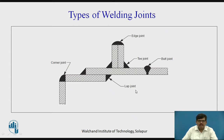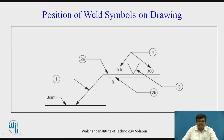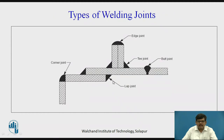Then we have lap joint. In a lap joint, one plate is placed over the other. This plate and this plate are placed one above the other, and the joint formed here is called a lap joint.